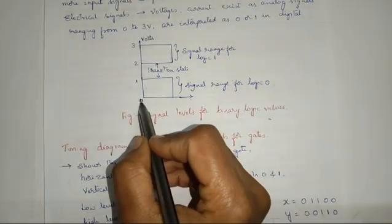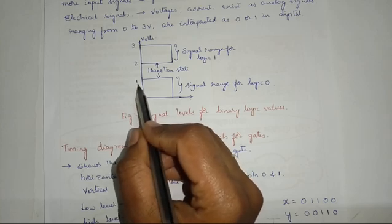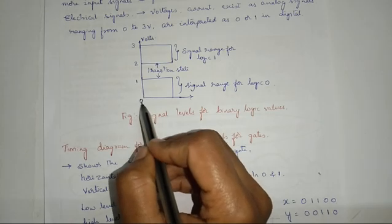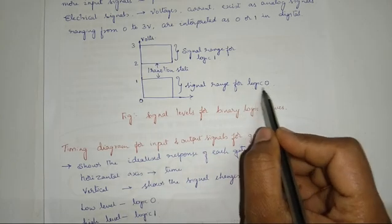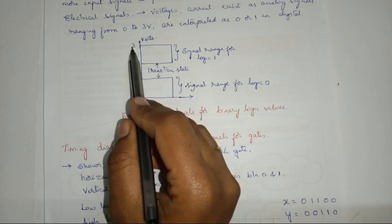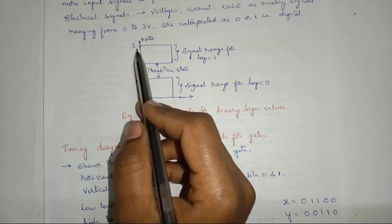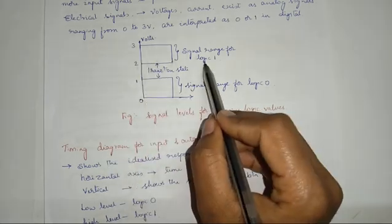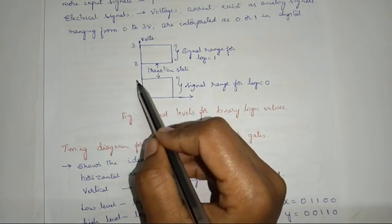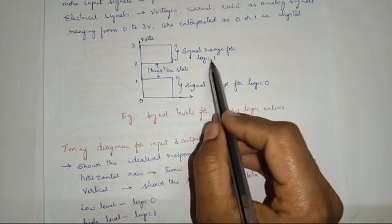Let us consider we have an analog signal ranging from 0 to 3 volts. We are converting or interpreting this 0 to 3 volt analog signal into a digital signal such that if the voltage is from 0 to 1 volt, we consider that signal as logic 0. Similarly, if the voltage is between 2 volts and 3 volts in analog form, we interpret that voltage as logic 1 in digital form. Whatever the signals are between 1 volt and 2 volts, this is called the transition state — we will not consider this as either 0 or 1.